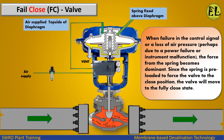How does a fail close valve work? When there is a failure in the control signal or a loss of air pressure, perhaps due to a power failure or instrument malfunction, the force from the spring becomes dominant. Since the spring is preloaded to force the valve to the closed position, the valve will move to the fully closed state.